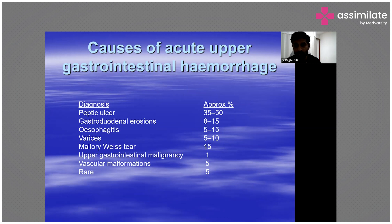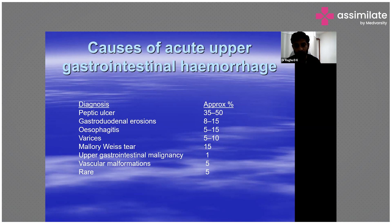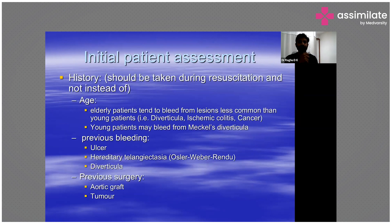Some rare causes you probably don't need to think too much about include Osler-Weber-Rendu syndrome, Meckel's diverticulosis, radiation proctitis, and diverticulosis — all rare causes of gastrointestinal bleeding.